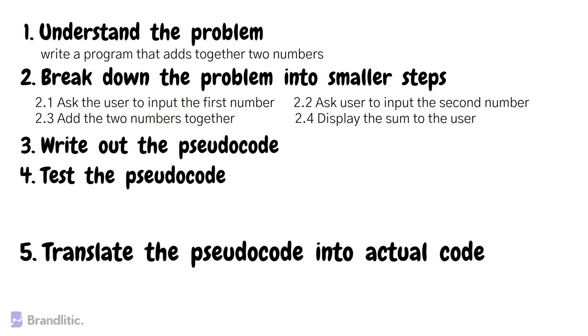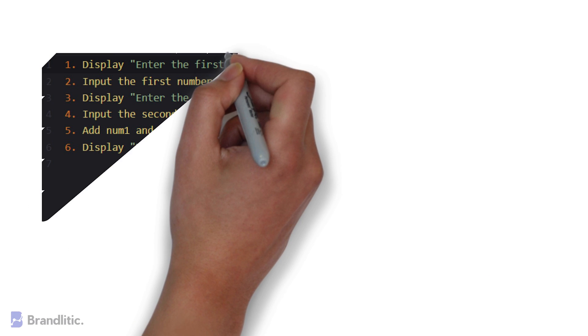Now here in step three, we need to write the pseudocode. Here we should be using simple English-like statements. And accordingly, we can write out the basic logic of the program as follows.